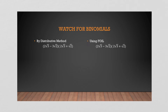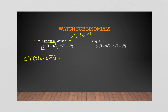Now what about when multiplication is a little more complicated? Here we have two binomials — two terms within each bracket. First I'll use the distributive method, which means this entire term multiplies in. You'd have to use the distributive method if you have more than two terms — if it were a trinomial, for example. So this entire first term multiplies through, giving you two root three times the whole second bracket, plus root two times the same thing.